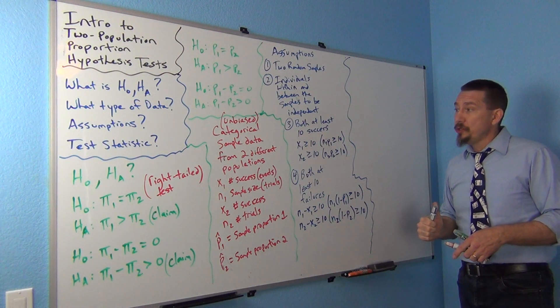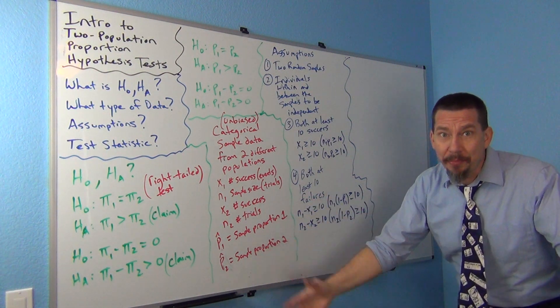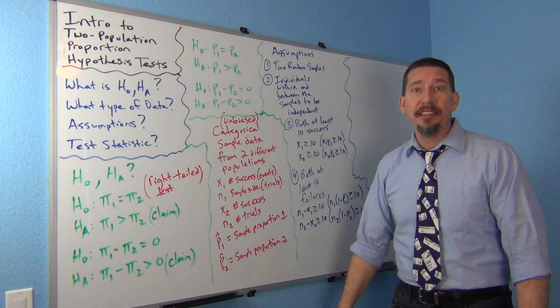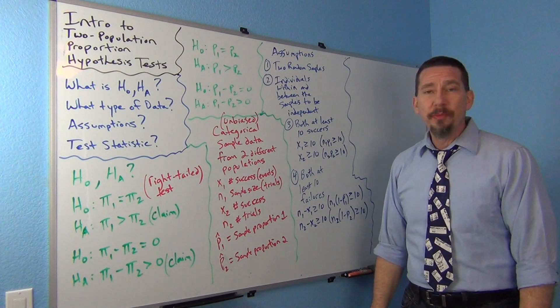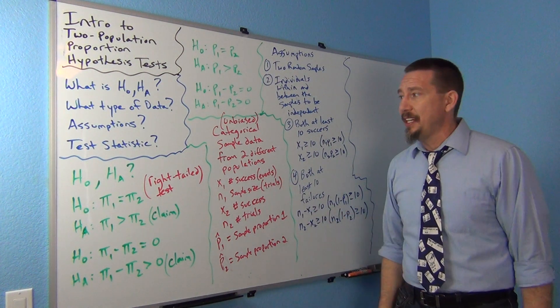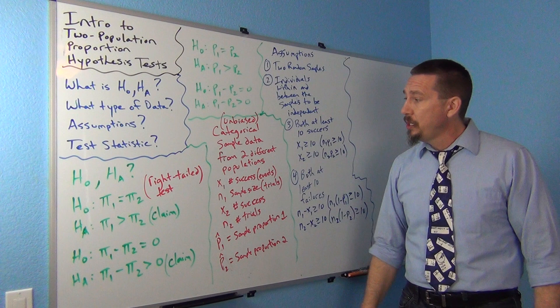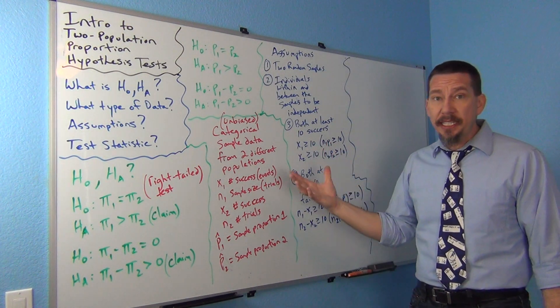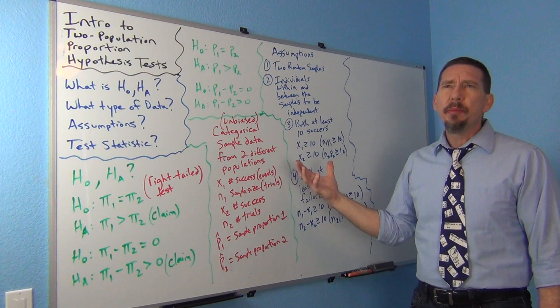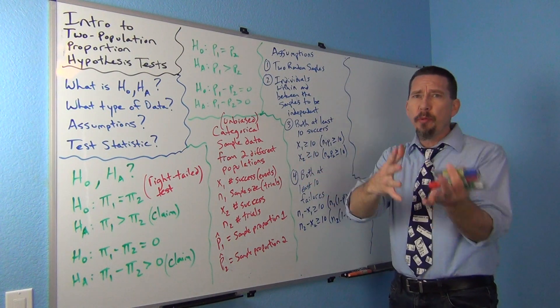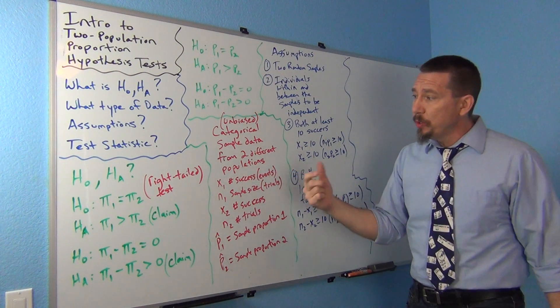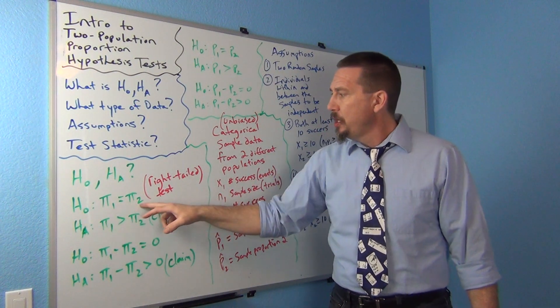Let's get to our test statistic. So, what test statistic are we going to use? Well, what did we use for one population proportion, right? We use the Z test statistic, right? The standard normal distribution with a Z test statistic counting how many standard errors. So, now what you're getting at is sort of this idea, same idea.